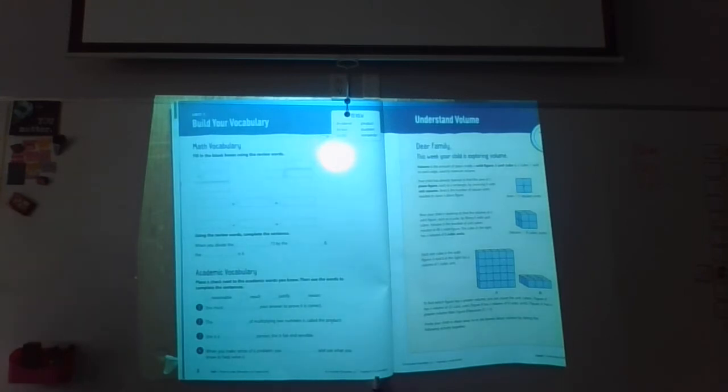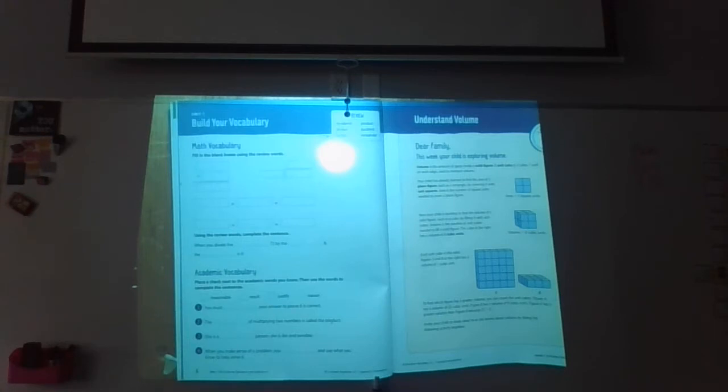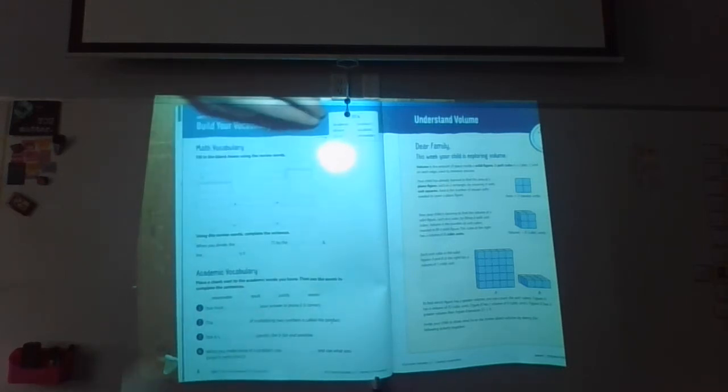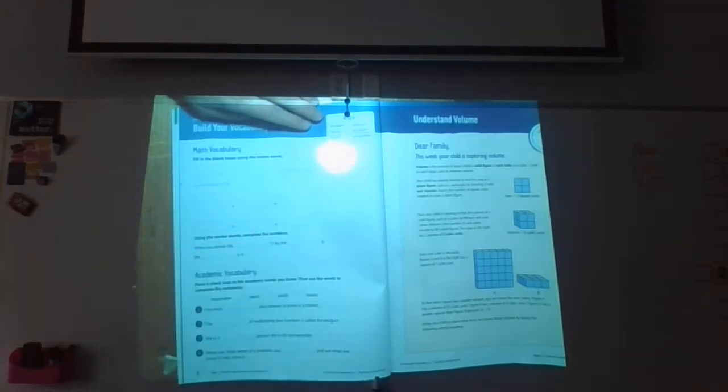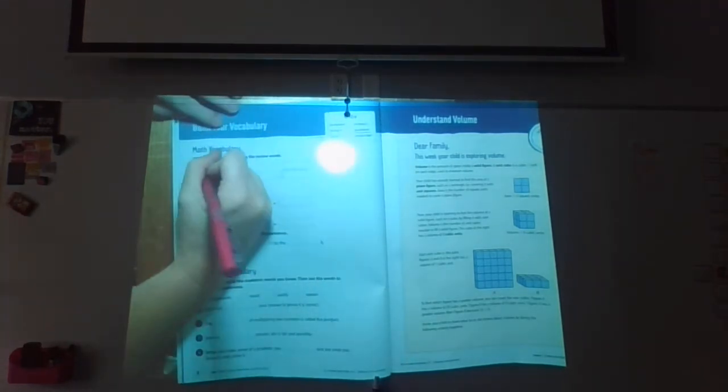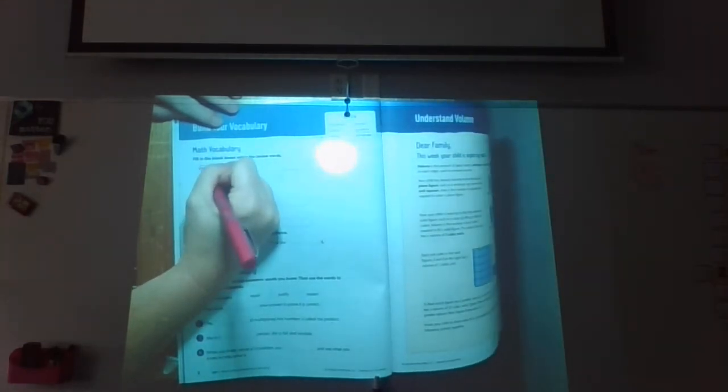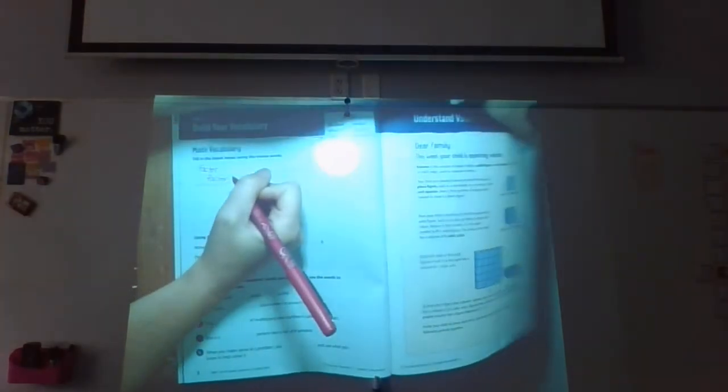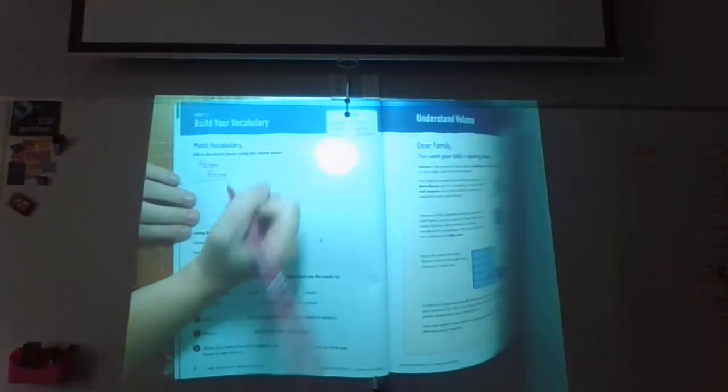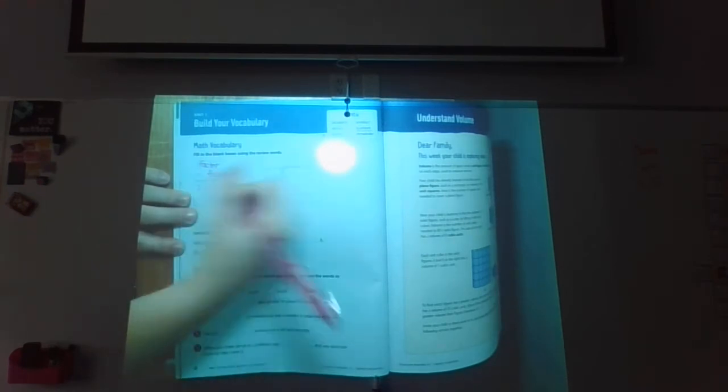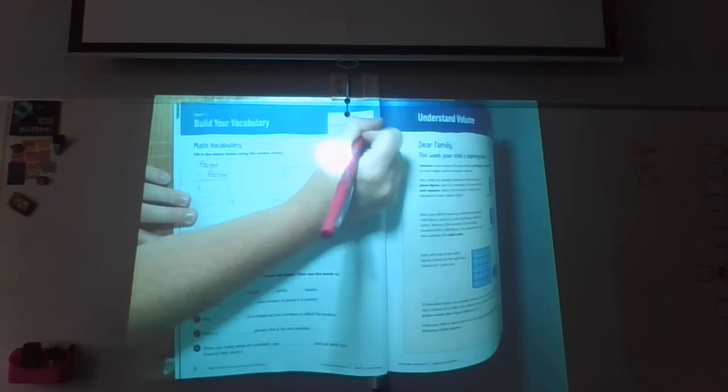Okay, so our first one says blank times blank equals what? Well, let's look at our words. We have dividend, divisor, factor, product, quotient, and remainder. All right, so what words relate to times tables? I know factor and product relate to multiplication. Factors are the numbers that we times. So we have a factor times a factor equals the product.